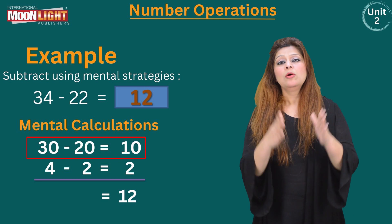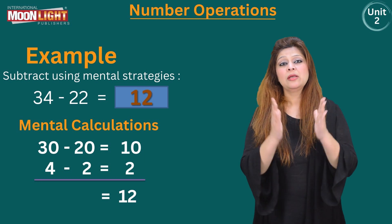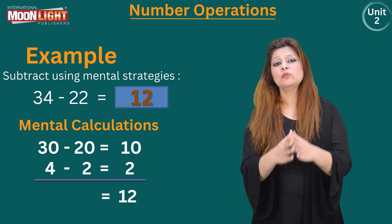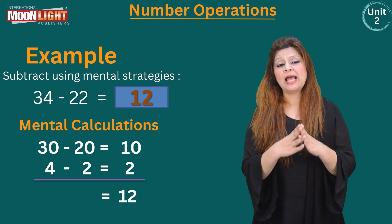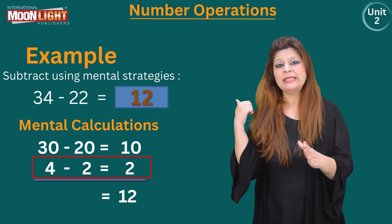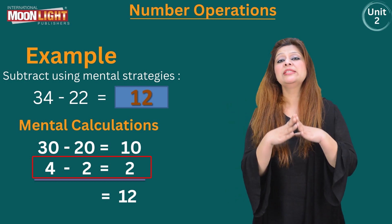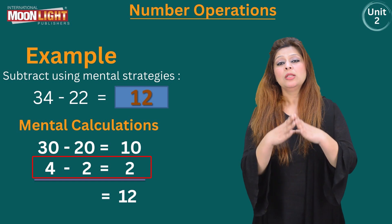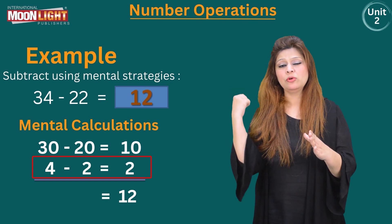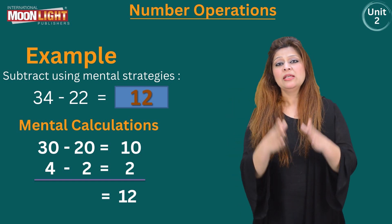Now I am going to subtract the digits at the ones place. 4 minus 2 equals 2. Now I am going to add both of these results: 10 plus 2.